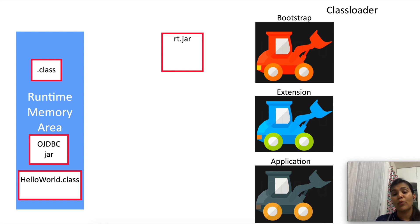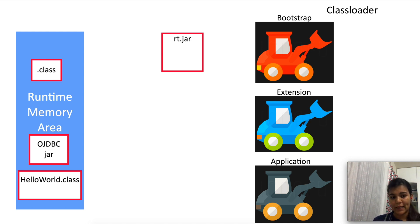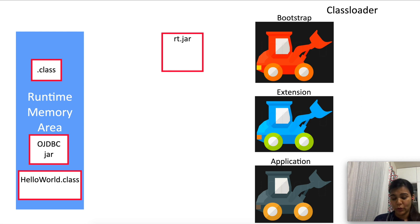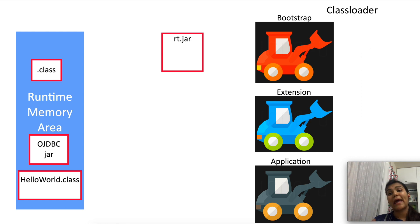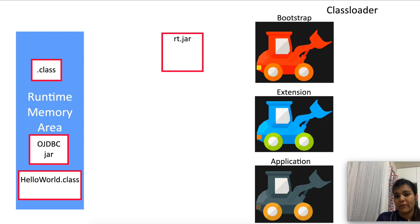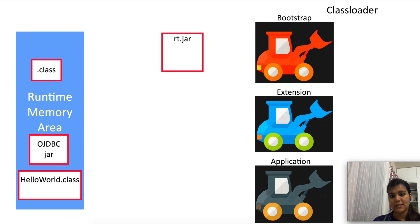A class will be loaded only when it is encountered during program execution. If a loader is looking up for a class file and does not find it, it looks for that class file in the parent. So if a .class file is not found in the application loader, the extension loader will be looked up for that file. If it's not found there either, the bootstrap loader will be checked. If it is not found there also, you will get a ClassNotFoundException. When .class files are loaded into the JVM, it knows the name of the class, the hierarchy of the class, and the fields and methods of the class.